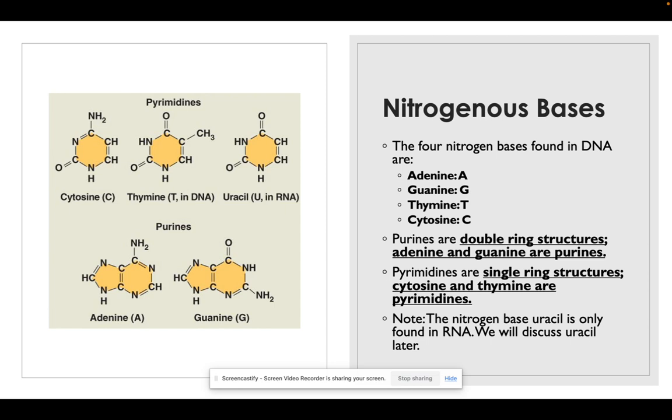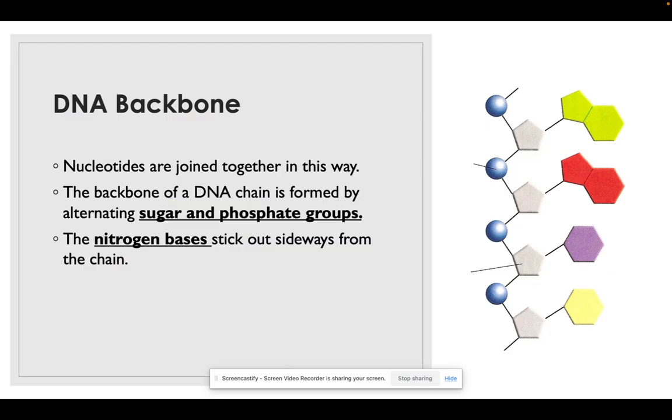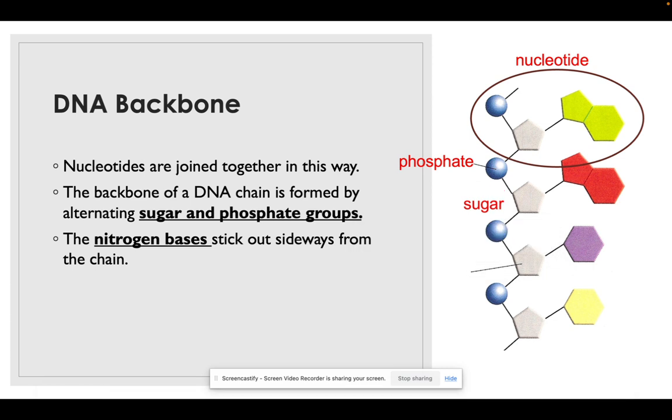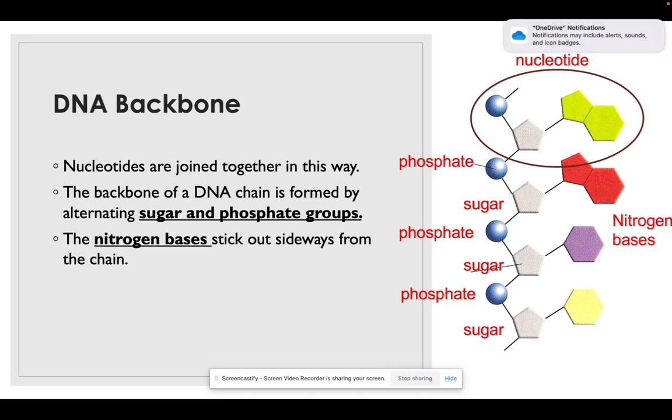The DNA backbone: nucleotides are joined together with a backbone. The backbone of a DNA chain is formed by alternating sugar and phosphate groups. So here we see a nucleotide in its entirety—phosphates are blue, sugars are gray, and then the nitrogen bases stick out on that side. It might be important for you on the notes packet to label these on the photo at the top of page two.